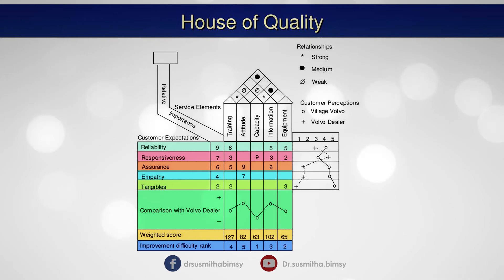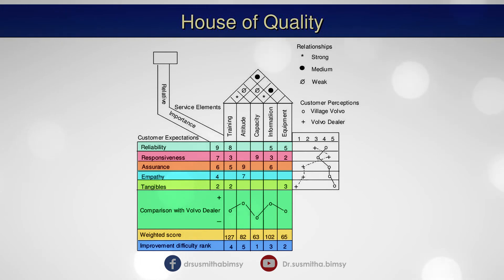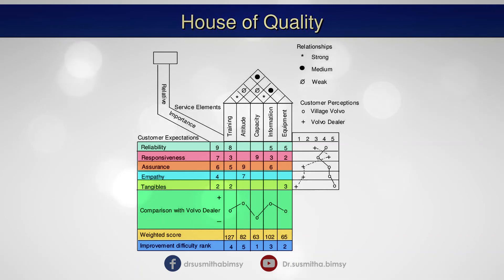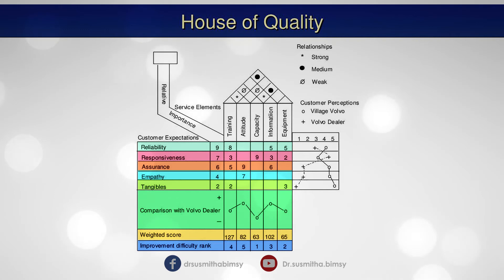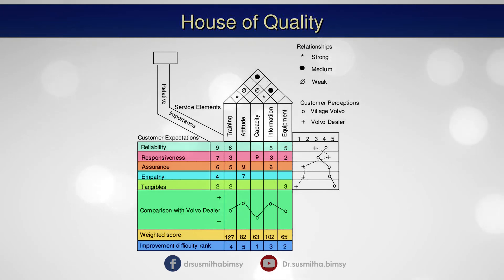For example, for training: 9×8 + 7×3 + 6×5 + 4×0 + 2×2 = 127, so the weighted score is 127. These scores should be treated relatively, however, and not as absolutes, because they are determined based on some subjectivity and judgment. Next are the difficulty rankings, listed in the basement of the house — these are assigned to each element in terms of how difficult it would be to make improvements, with a ranking of one being the most difficult. For the capacity column, we can see a ranking of one.